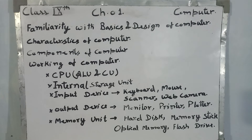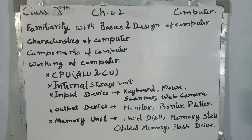After that, output devices — output devices covers the monitor, printer, and plotters. Then the memory unit, which is the important part of the computer responsible to store our data.